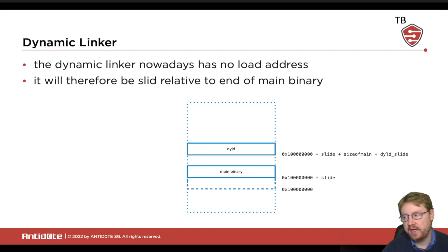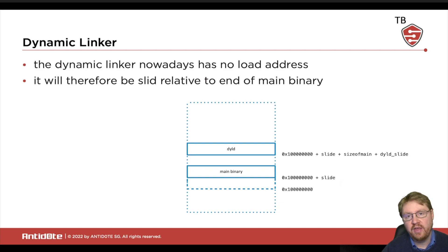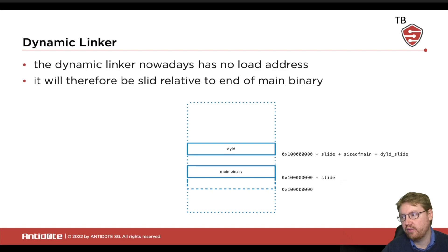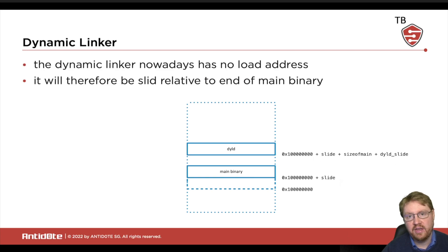Now the question is where the dynamic linker will be loaded. The dynamic linker used to have a fixed load address with ASLR applied relative to that. But nowadays it is relocated depending on the end of the main binary — basically loaded at the base plus the slide of the main binary, plus the size of the main binary, plus a dynamic linker slide that was also randomly generated by the kernel.